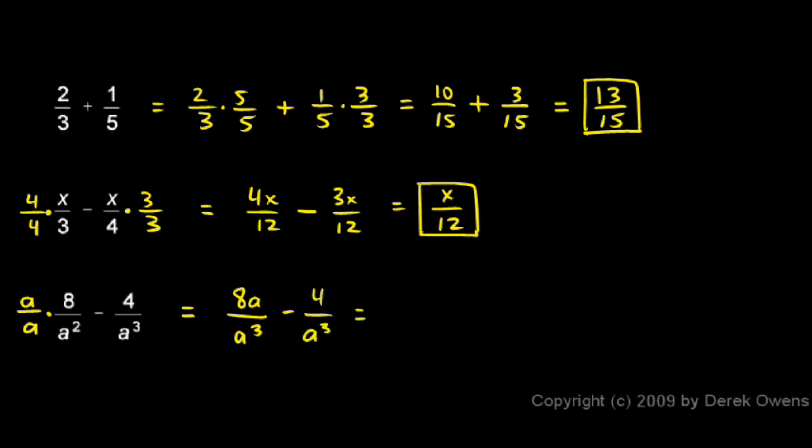So what does this equal? Well, I have 8a over a cubed minus 4 over a cubed. So this ends up being 8a minus 4 over a cubed.